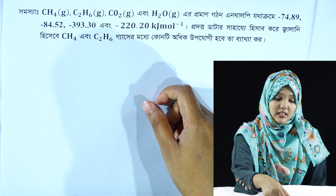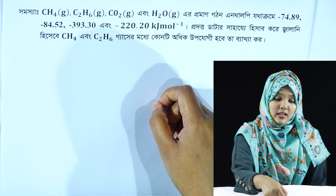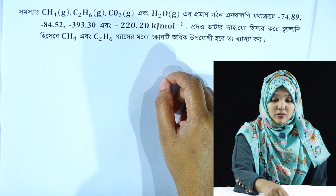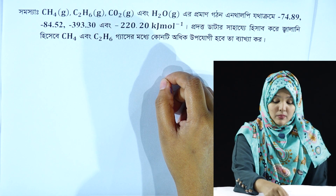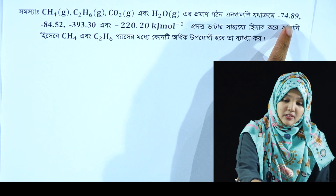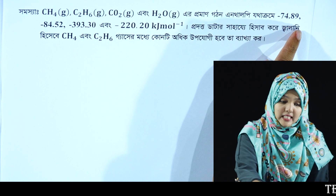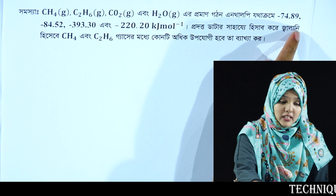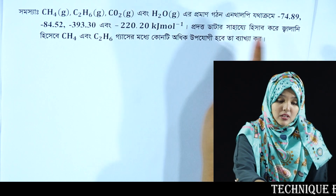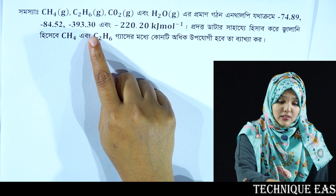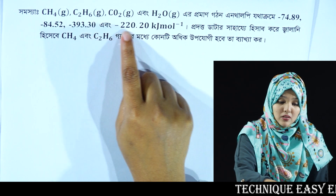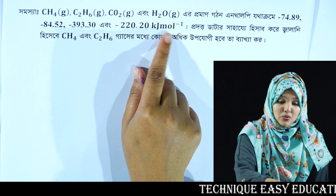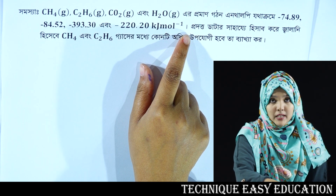We are going to talk about methane, ethane, carbon dioxide, and their enthalpies: minus 74.89, minus 84.52, minus 393.30, and minus 220.20 kJ per mole.